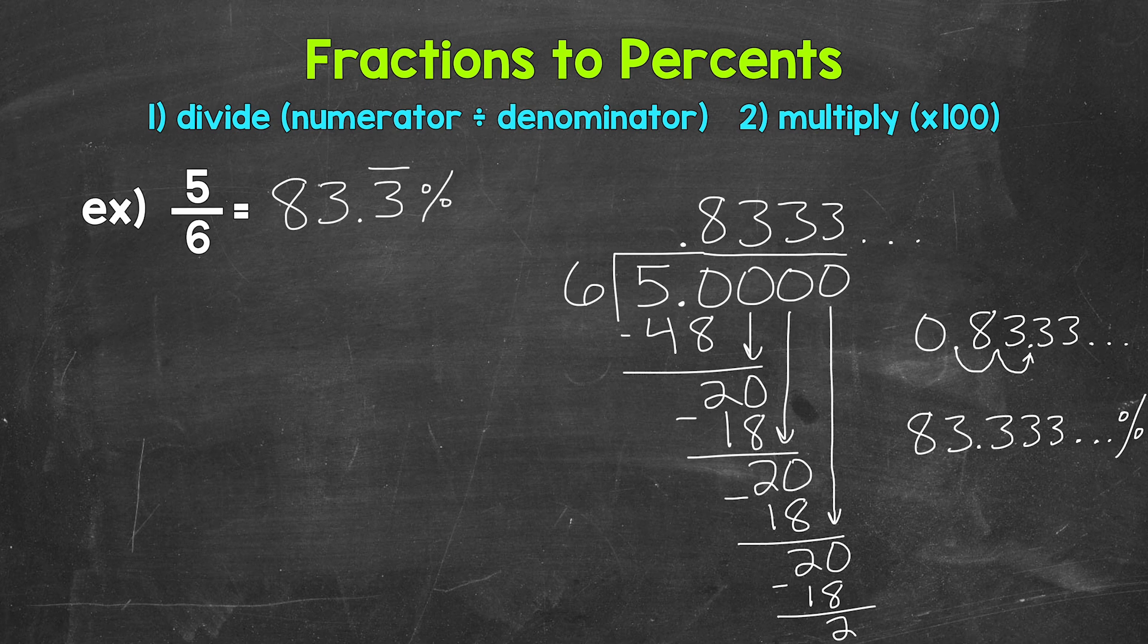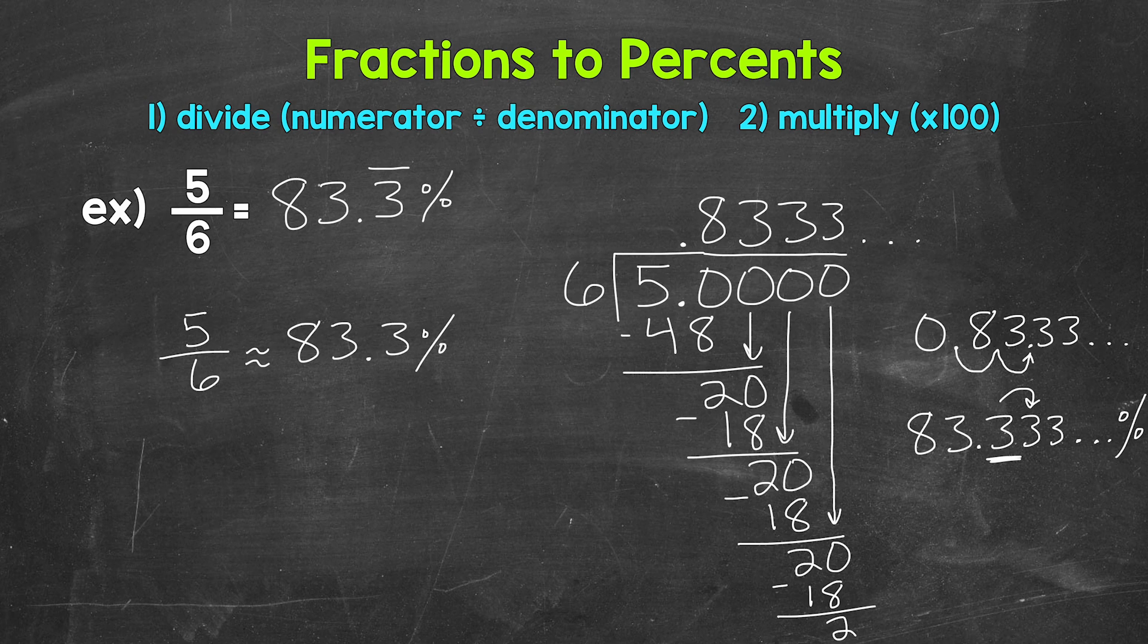5 sixths equals 83.3 repeating percent. That's one option as far as writing out a repeating decimal as a percent. Another option is to round. We can round to whatever place we would like. For this example, let's round to the tenths place and nearest whole percent. Starting with the tenths place, 5 sixths is approximately, and I'm using the approximately symbol here since we are rounding. We have a 3 in the tenths place with a 3 in the hundredths, so this rounds to 83.3 percent.